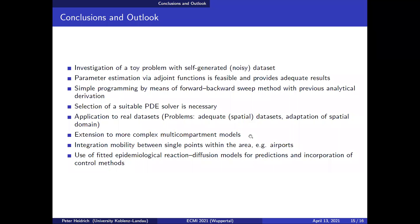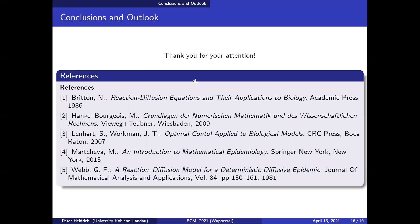It should be extended to a more complex multi-compartment model, for example for COVID-19 or dengue. We can integrate mobility not only spatially with reaction-diffusion but also with movement between single points such as airports or cities — similar to what we did in Jakarta. At the end we want to use these models for prediction or to incorporate control methods if possible. That concludes my presentation, thank you.